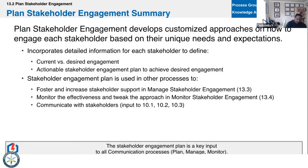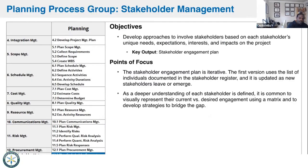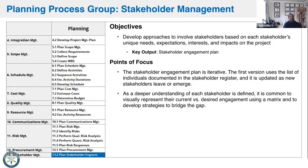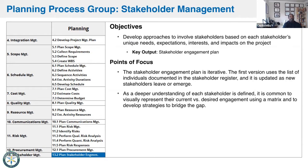Here's one of the things that's interesting or that makes sense. For all of these knowledge areas — scope, schedule, cost, quality, resources, communication, risk, procurement — we come up with a plan first.